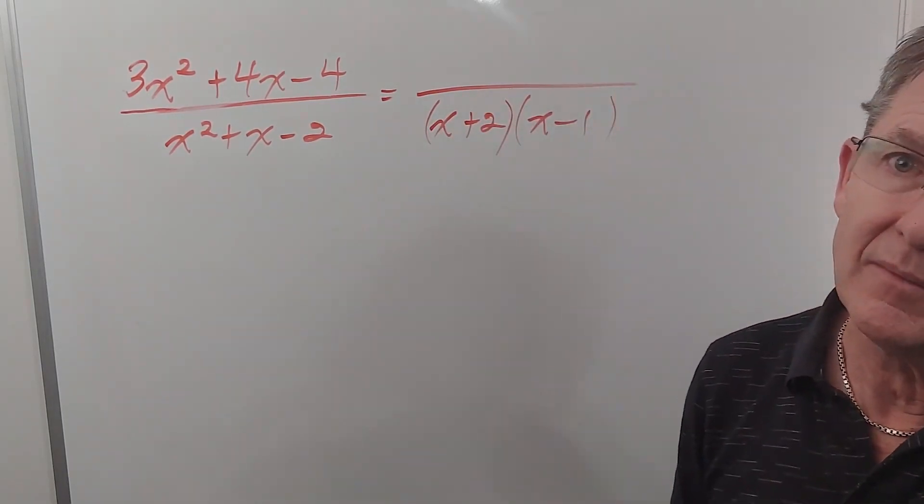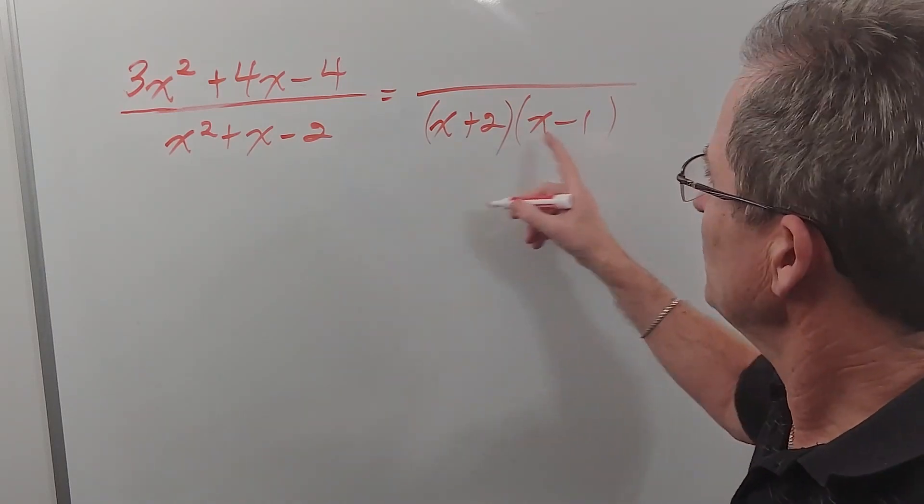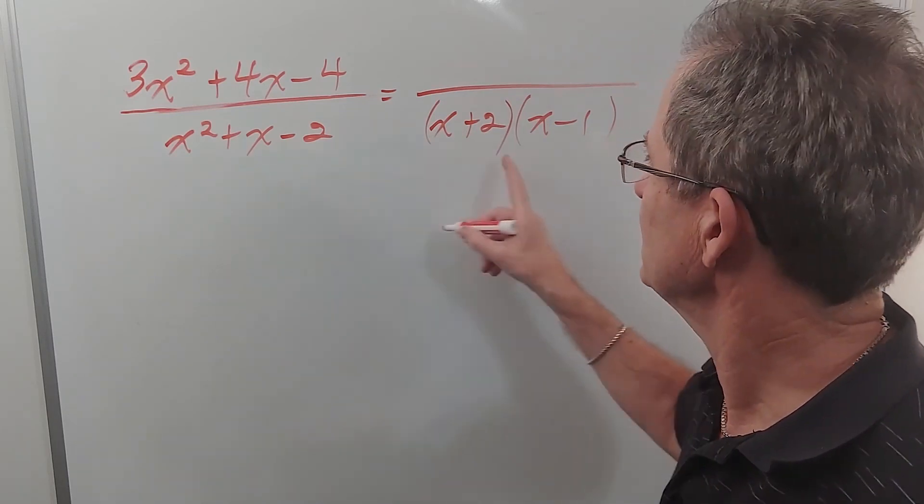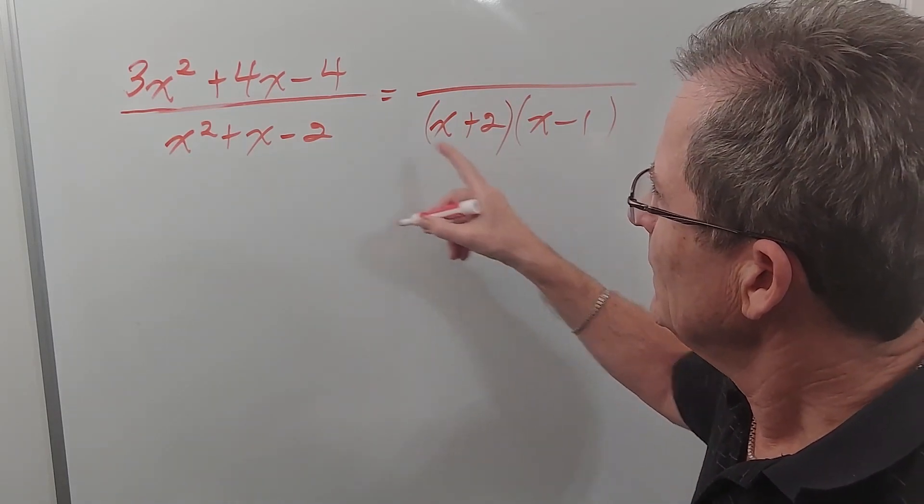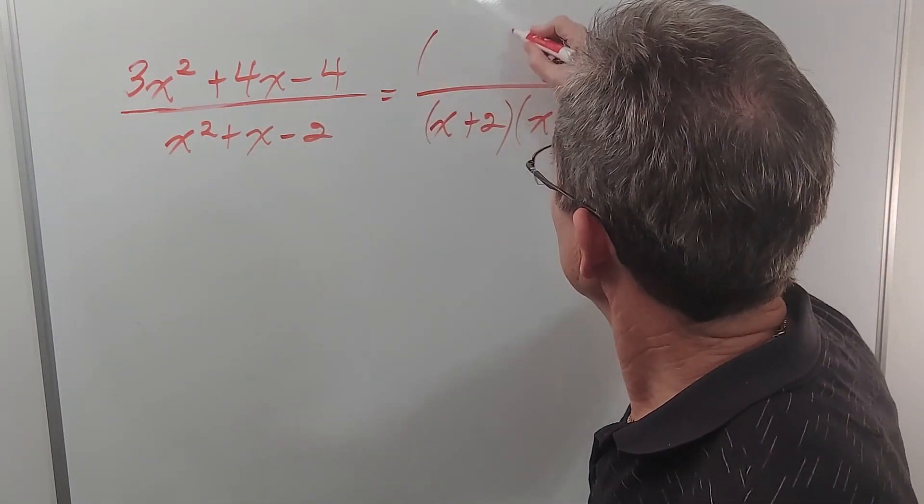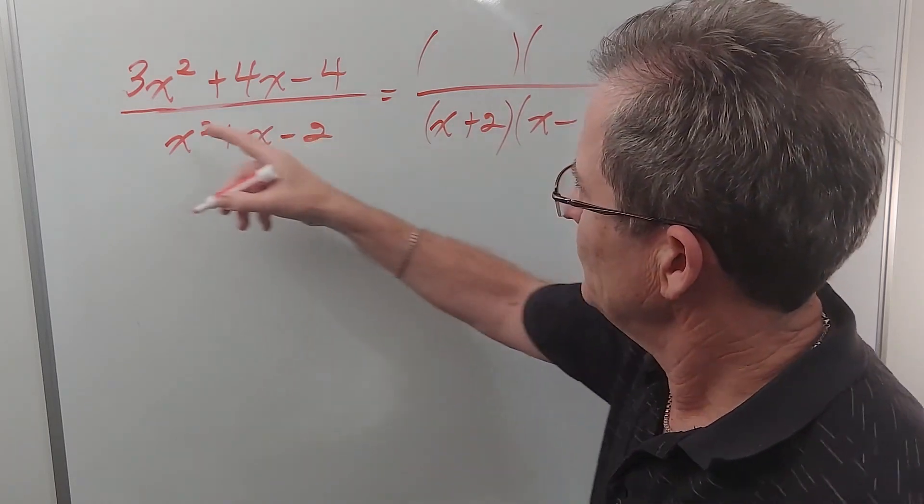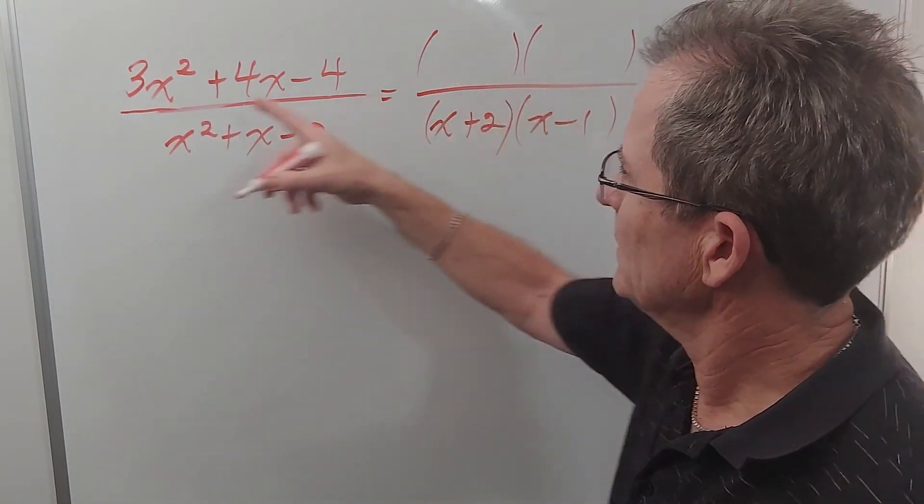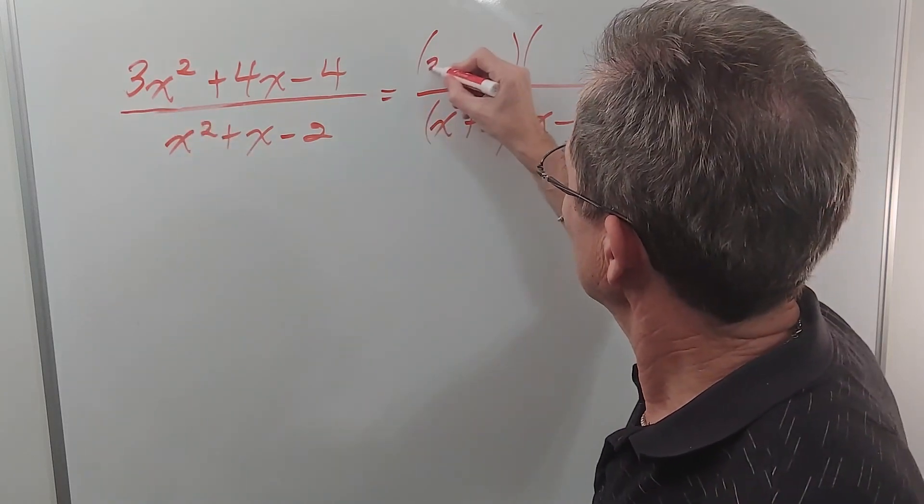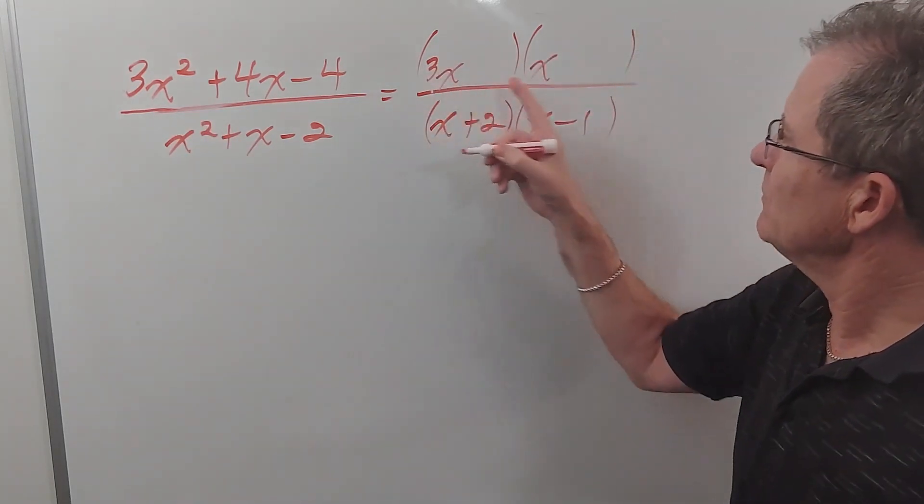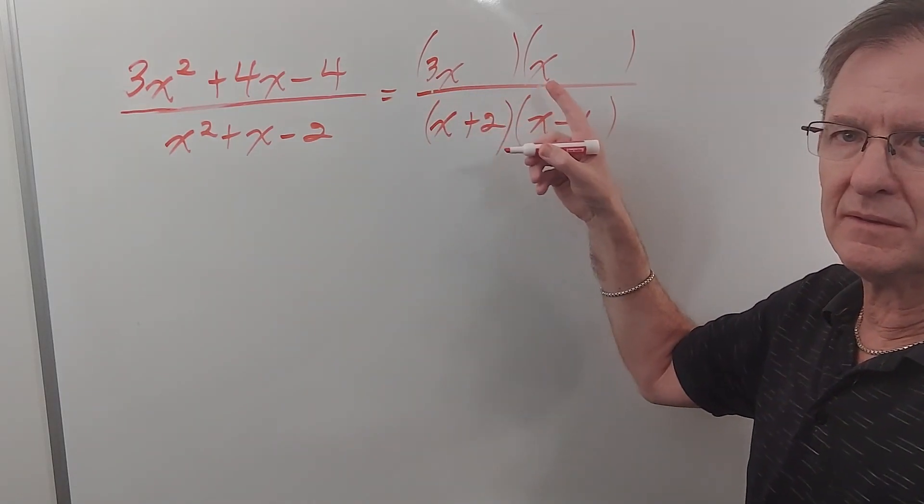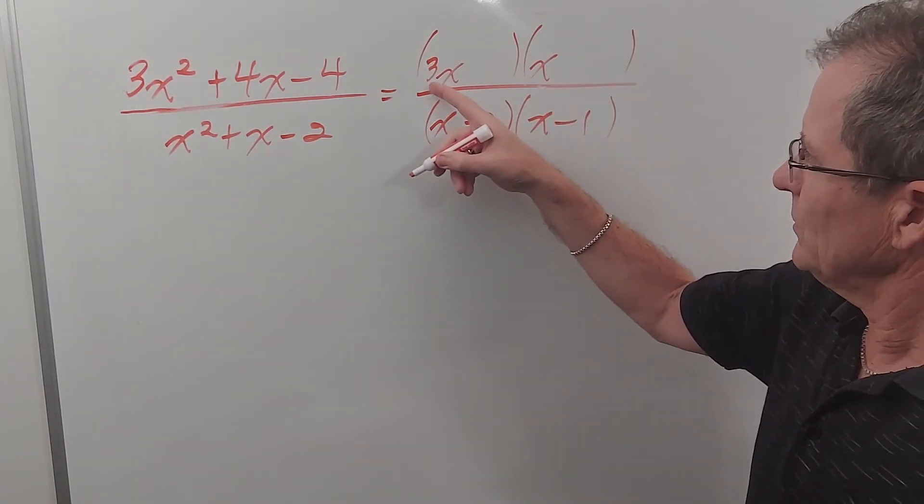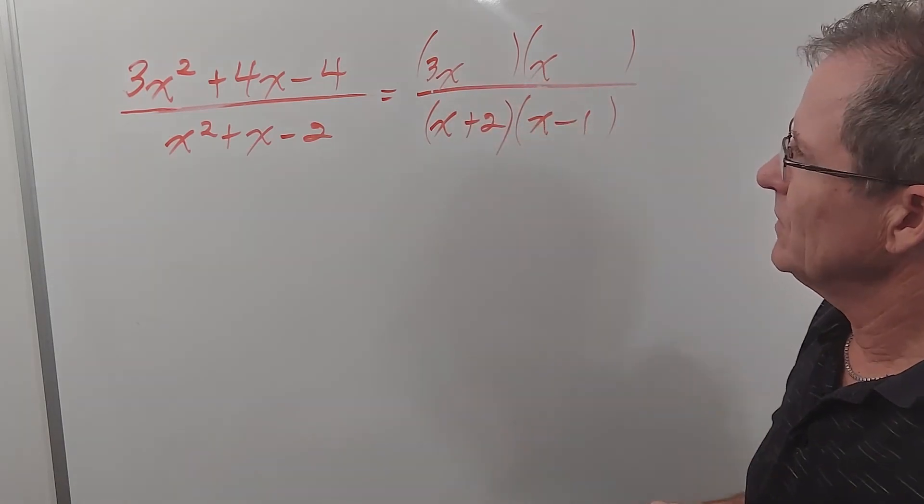So to save time I'll do that because 2 times negative 1 gives you negative 2 and 2 plus negative 1 gives you 1. So this is correct. Now to factor that complex trinomial you have to get 3x squared so these x's times those x's have to give us 3. There's only one way to do that 3x times x. We'll use 3 and 1. Stick with positive numbers.